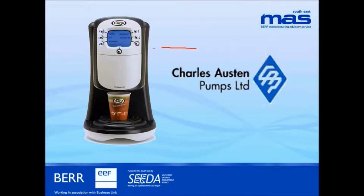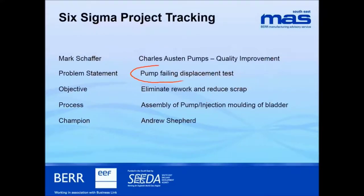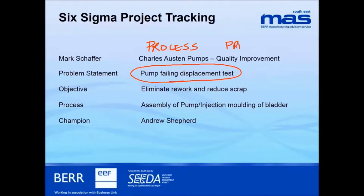Here's the finished item — it's actually a pump made by Charles Austin Pumps that goes into coffee machines. The problem is the pump is failing the displacement test, and we have to answer this question: is it the assembly process causing the problem, or is it the parts? Unless we can answer that question, we will go to the wrong place to look for answers.